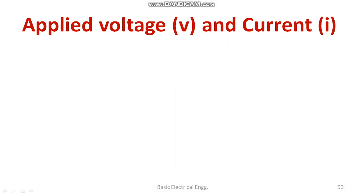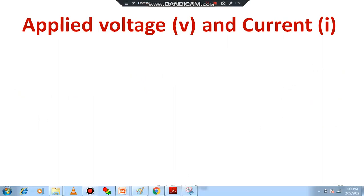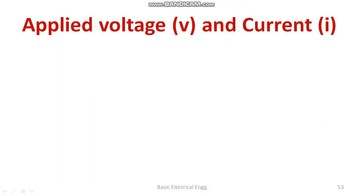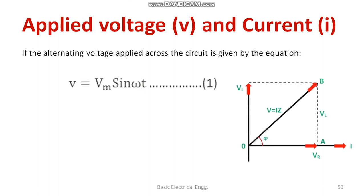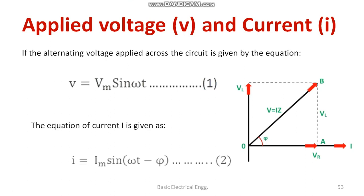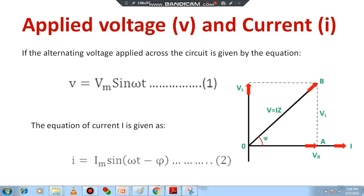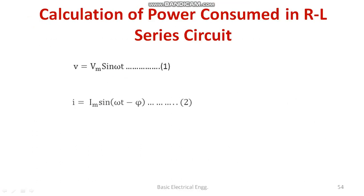Regarding the relation between applied voltage and current: in this circuit, the voltage leads the current at an angle of φ, or equivalently, the current lags the voltage by an angle of φ. If voltage V = Vm sin(ωt), then current is represented as I = Im sin(ωt − φ), where φ is the phase angle.